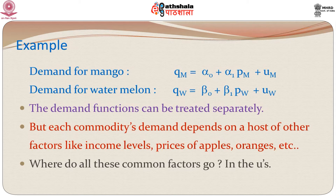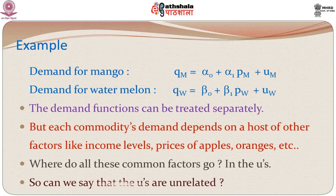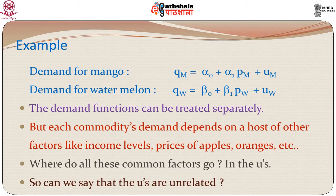Now, u_m and u_w have a lot of common factors, and these common factors would move in the same direction — they would move together. So can we say that the u's are unrelated? Possibly not. If we had thought of u_m as simply random errors, we could have treated the two equations separately. But these are not random errors; these are disturbances which consist of some specification bias and some modeling bias, and hence they may be correlated among themselves. We call this contemporaneous correlation.